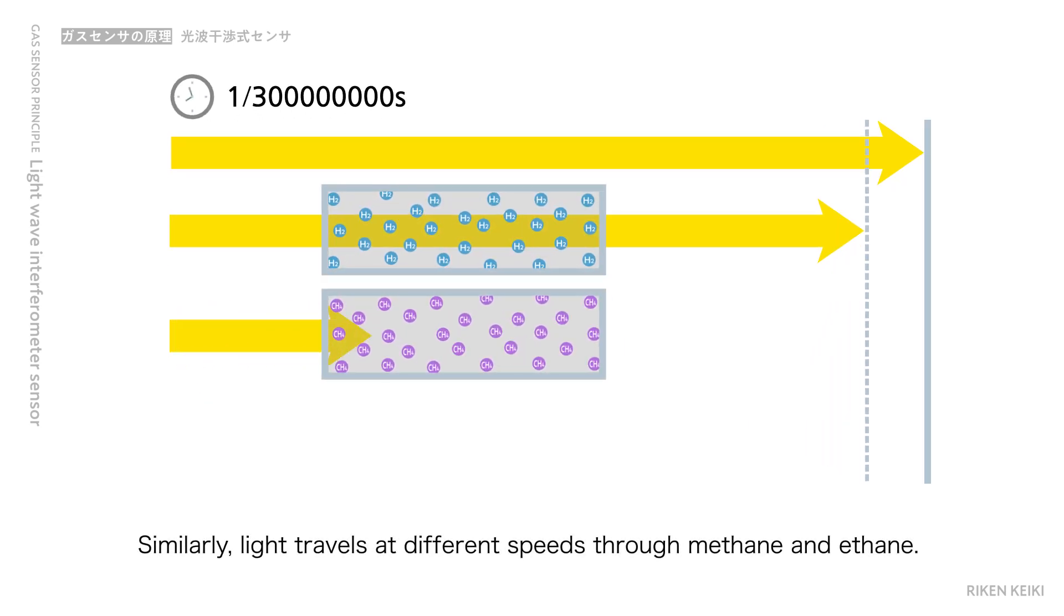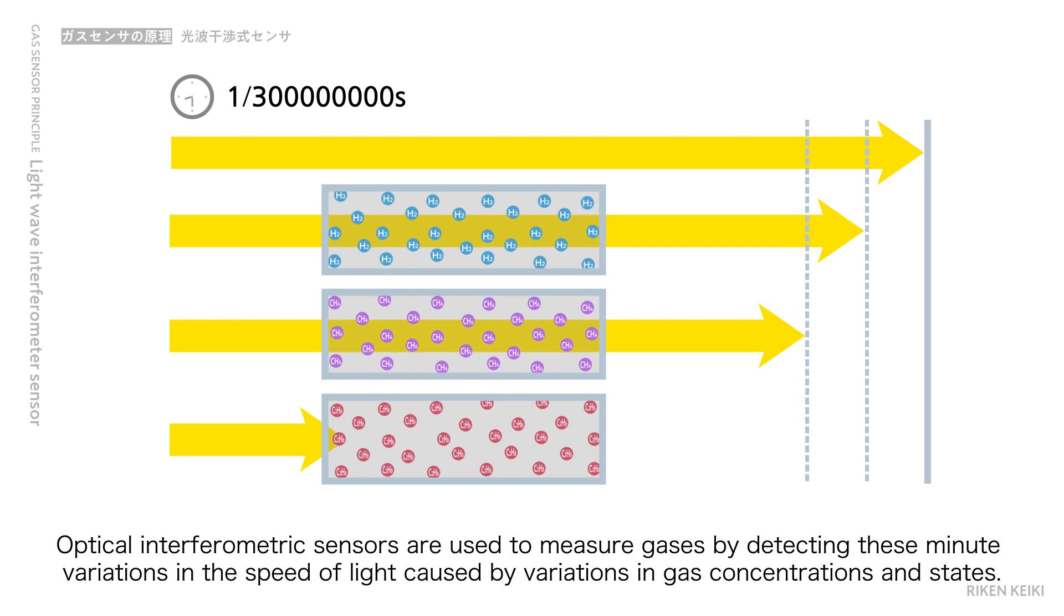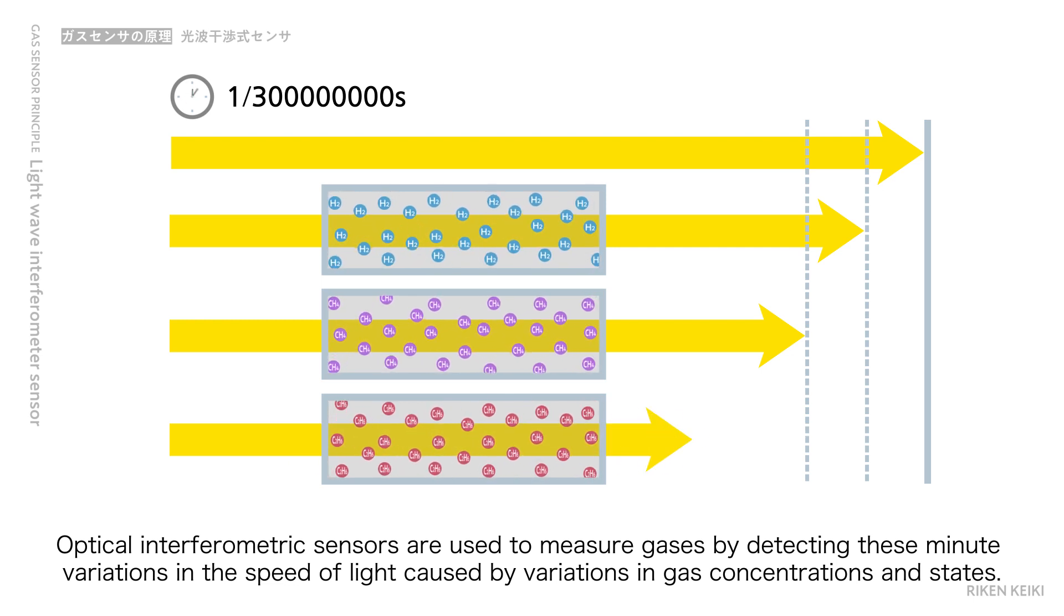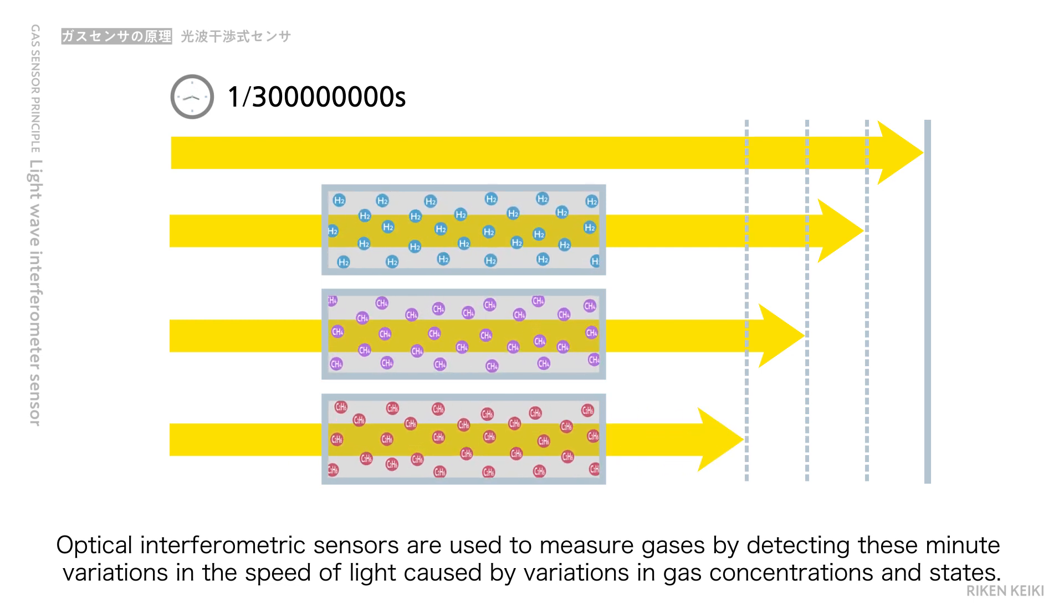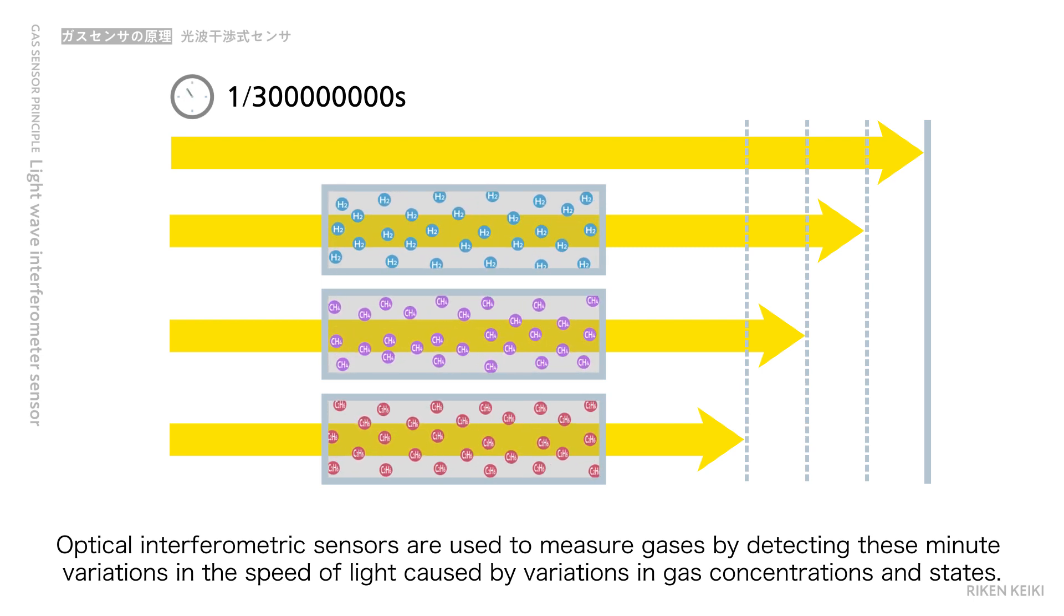Similarly, light travels at different speeds through methane and ethane. Optical interferometric sensors are used to measure gases by detecting these minute variations in the speed of light, caused by variations in gas concentrations and states.